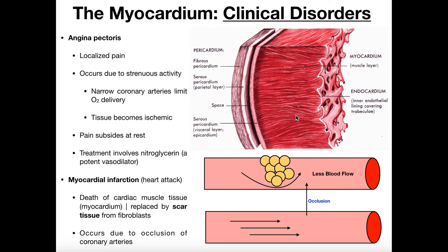If the heart attack is serious enough, the person can die acutely from it. A myocardial infarction is death of the cardiac muscle tissue. In angina, there's no death of tissue — it's simply reduced blood flow and you end up with pain. The pain is telling you to stop whatever it is you're doing. In a heart attack, the tissue actually dies. Depending on how widespread the occlusion is and how widespread the ischemia is, you can have more and more dead tissue.